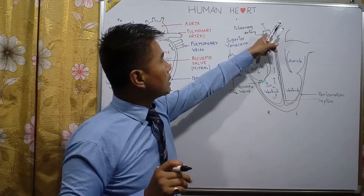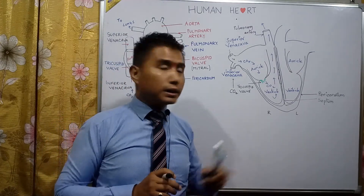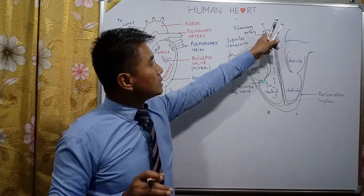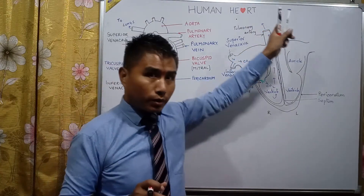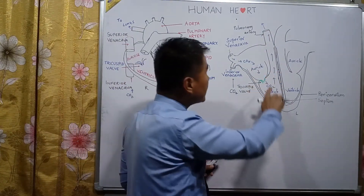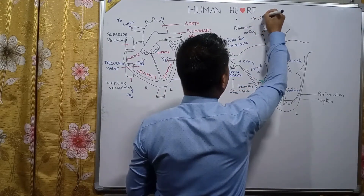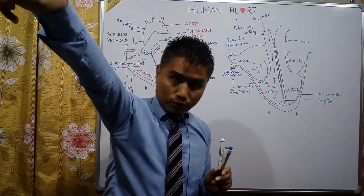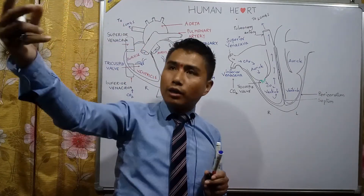Why is this called the pulmonary artery? Normally an artery carries only oxygenated blood, but here the artery is carrying deoxygenated blood. This blood vessel is called an artery because the ventricle pumps the blood with force — the blood has to go to the lungs, where carbon dioxide is given to the alveolus and oxygen is taken from the air sacs.